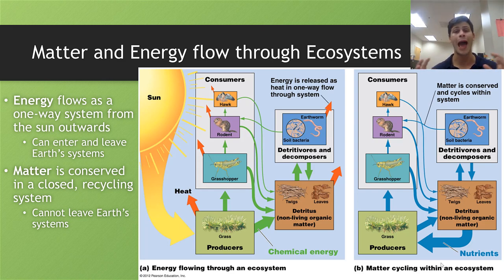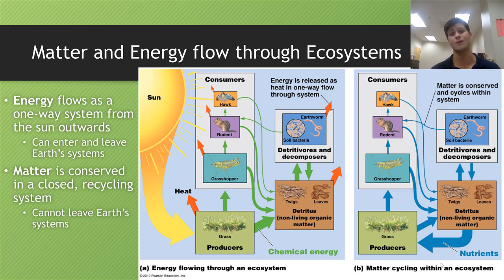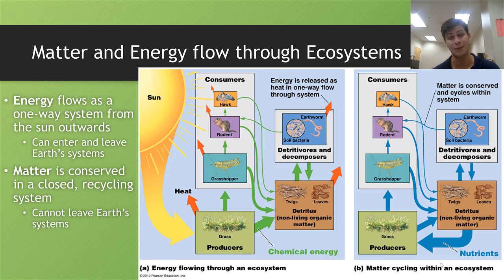Energy comes through the sun, stays on the planet for a while, and then leaves in different forms — usually heat, light, or sound. The sun powers most of the energy in biological ecosystems and enters through solar energy. That solar energy is converted by plants and other autotrophs into usable sugars — they take the sun's energy and store it in the chemical bonds of carbohydrates. Those carbohydrates are then eaten by different organisms, forming the entire basis of the food chain.